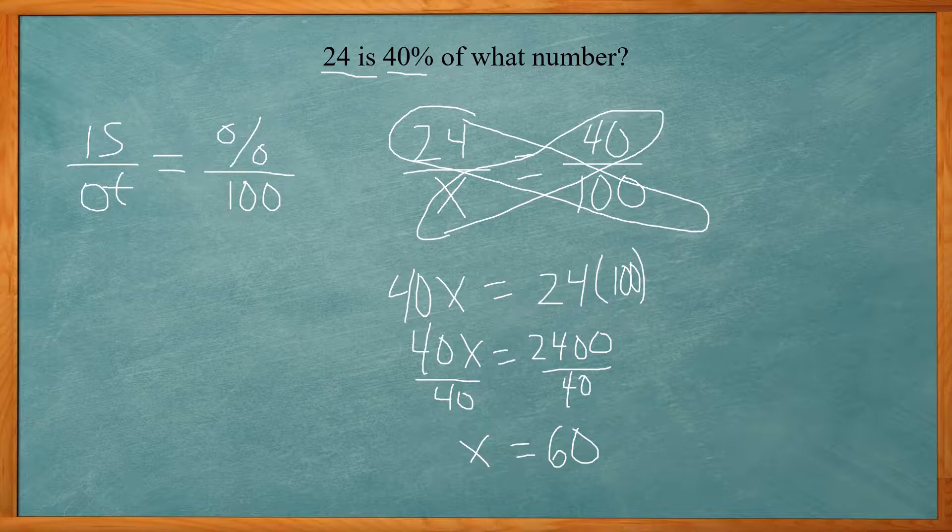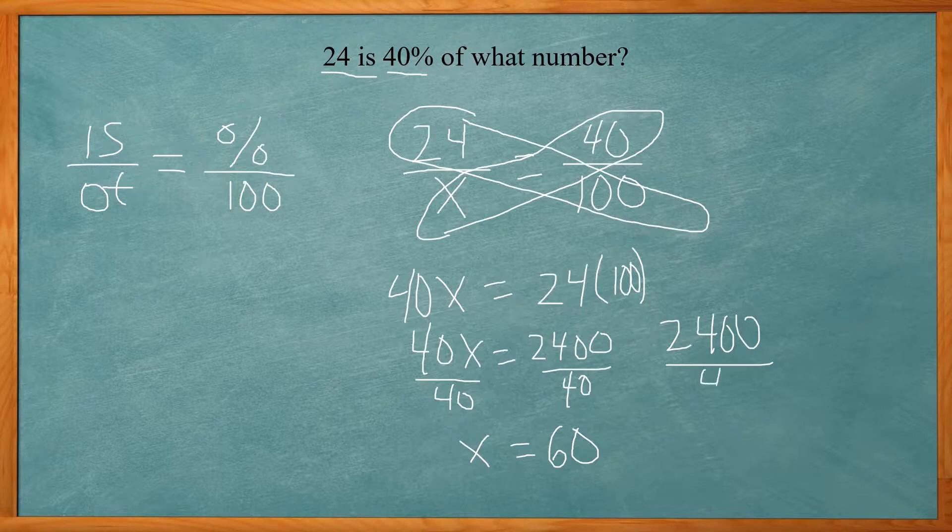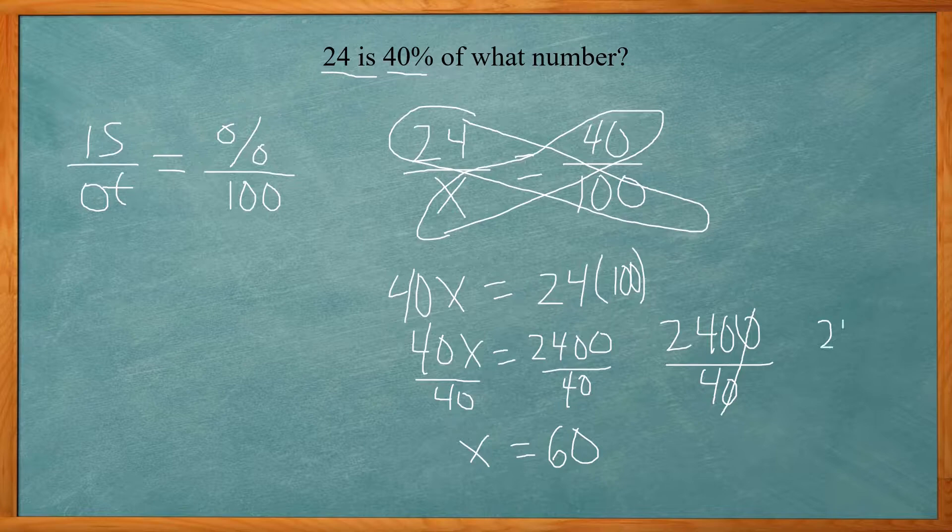Now to do the actual division, you can take 2,400 divide by 40. Now anytime you have zeros at the end, they can cancel out. So that reduces down to 240 divide by 4.